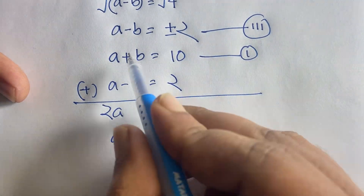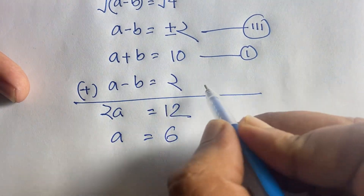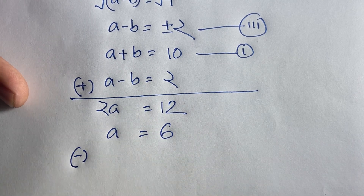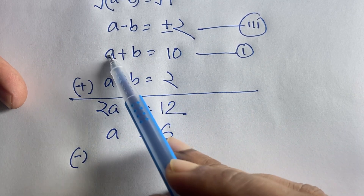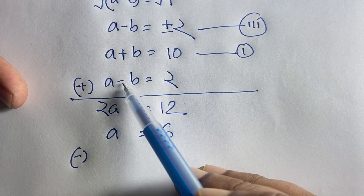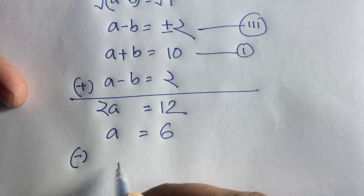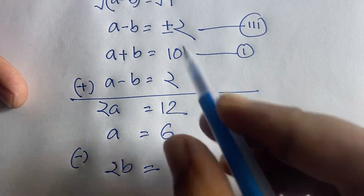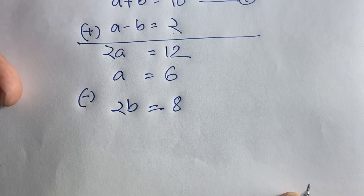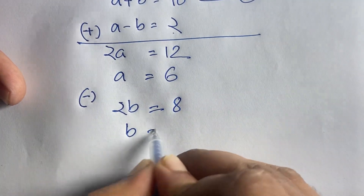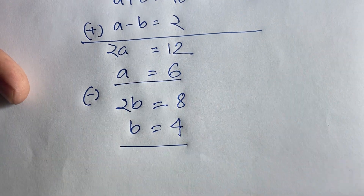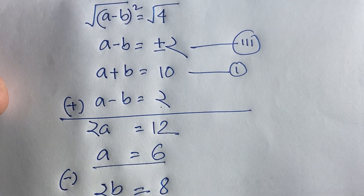Now subtracting both equations: a minus a gives 0, and b minus minus b gives 2b, so 2b is equal to 10 minus 2, which is 8. Dividing both sides by 2, b is equal to 4. So when a is equal to 6, b is equal to 4.